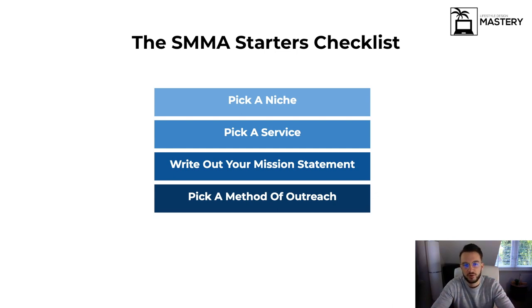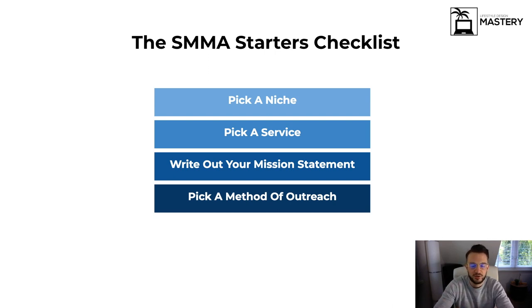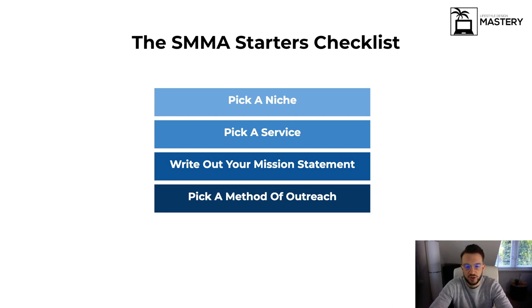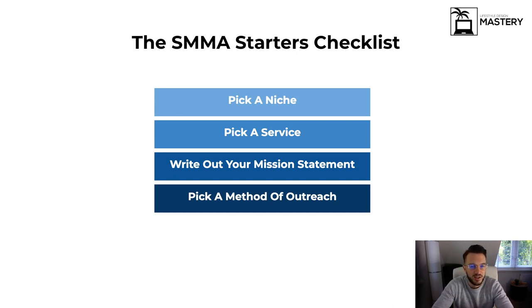Then the second thing you need is something to offer — that's when we start picking our service. I'll be going into all the details in just a moment, but this is basically the broad helicopter overview of the starter's checklist. So we pick our niche, we pick our service, and then we write out our mission statement — which is basically what you're going to do for your client, what transformation they're going to get by working with you. Once you have all that down, you pick a method of outreach.